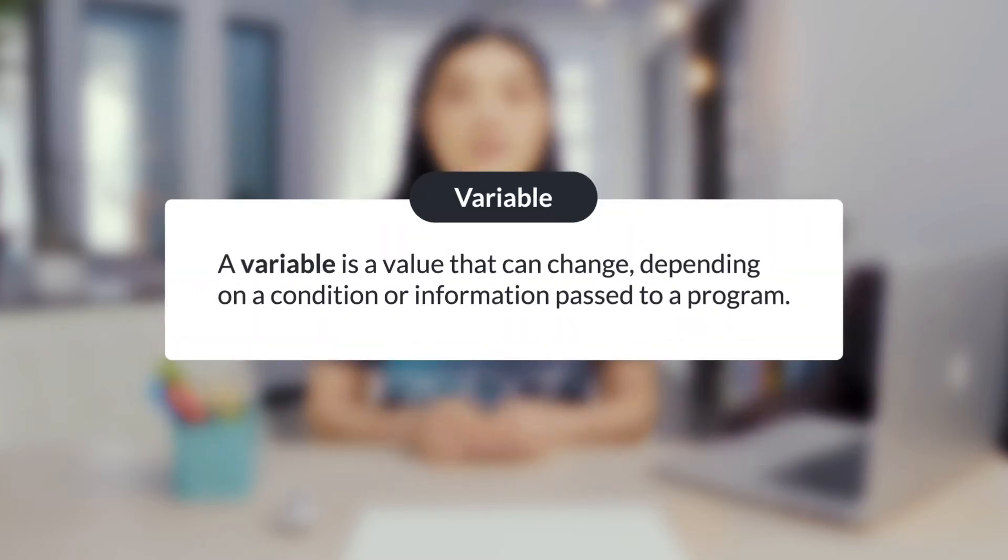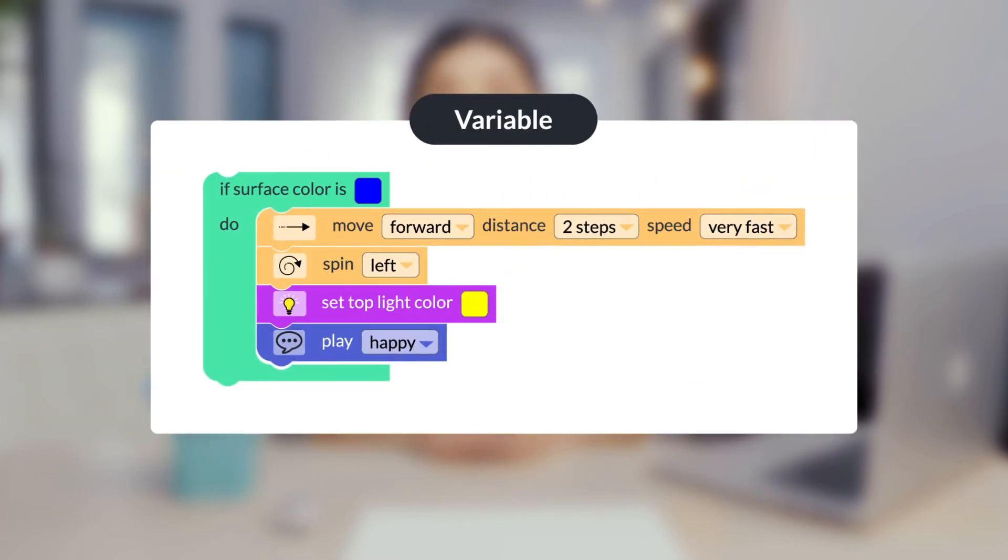Finally, a variable is a value that can change depending on a condition or information passed to the program. Here's the original sequence, now controlled by a variable, the color of the surface.